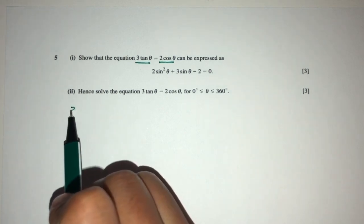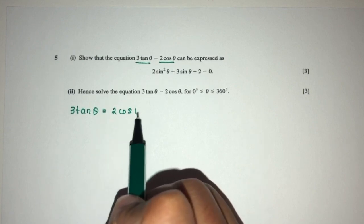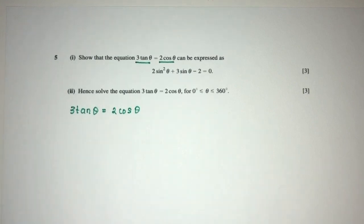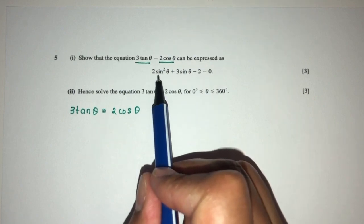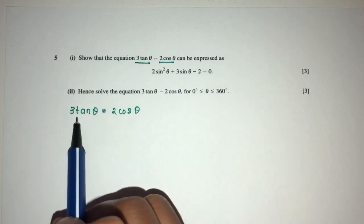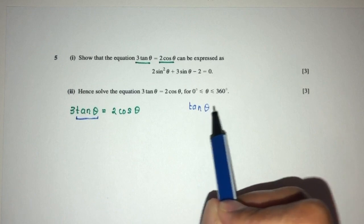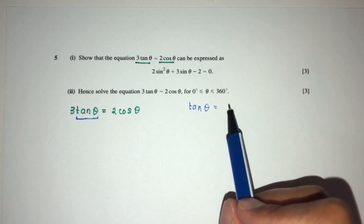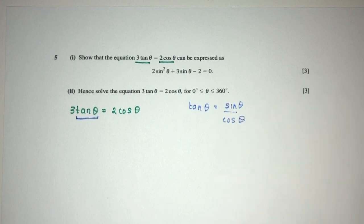So here we have 3tan(θ) = 2cos(θ). Now we understand that in this equation we don't have any tan, no cos. So we have to do something, we have to change something. Let's first try to change this. We understand that tan(θ) is equal to sin(θ) over the value of cos(θ). That's something we know.